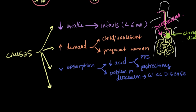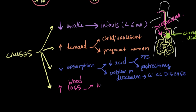Finally, what I think is the most important cause of iron deficiency anemia: increased loss of iron from the body, usually seen with blood loss. With blood loss, you lose red blood cells, and with that comes the loss of hemoglobin and the iron inside it. This is seen in a few cases — first, especially in young women who have not yet reached menopause, heavy menstrual bleeding or heavy menstruation.